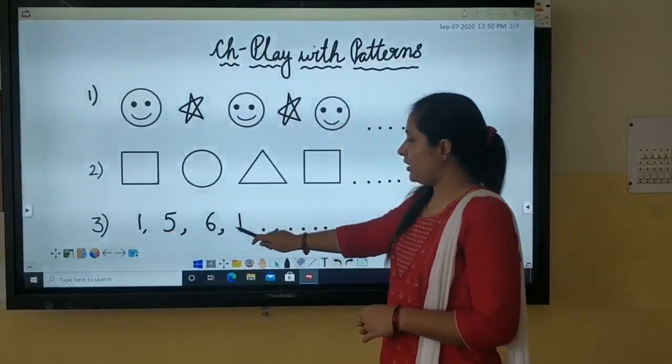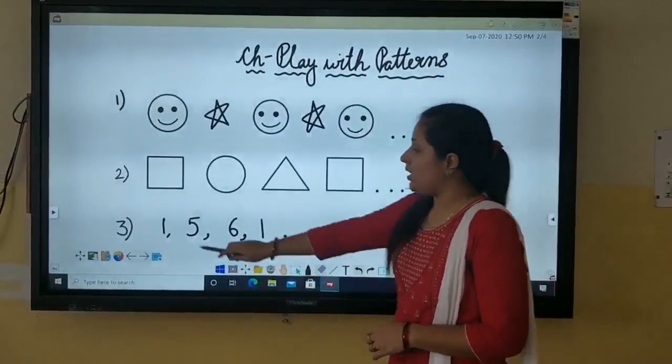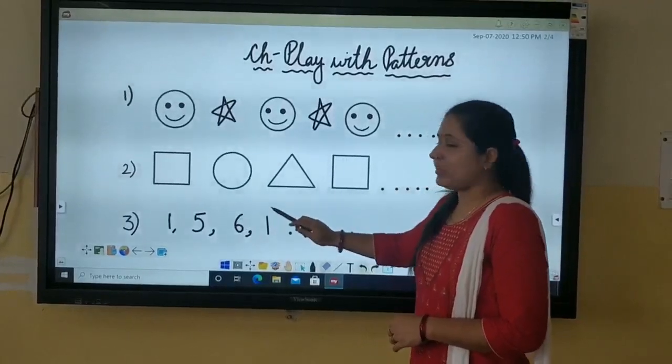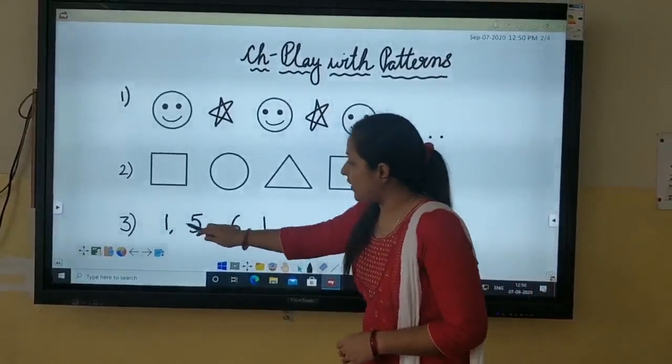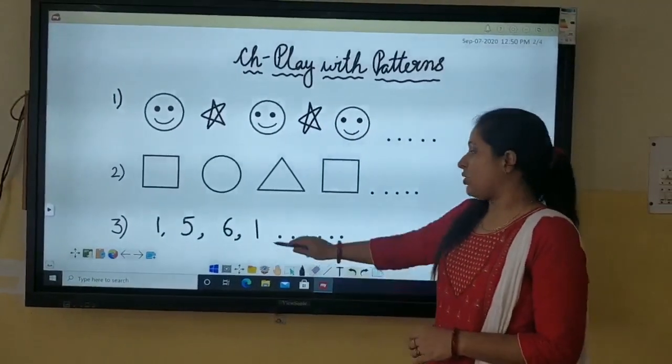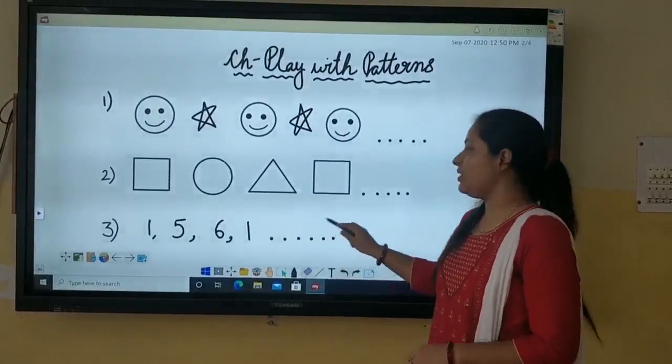Third one. These are numbers written in a particular pattern. Number one, five, six. Then again it is one. So we can see one, five, six are being repeated. They are forming a repeated pattern.